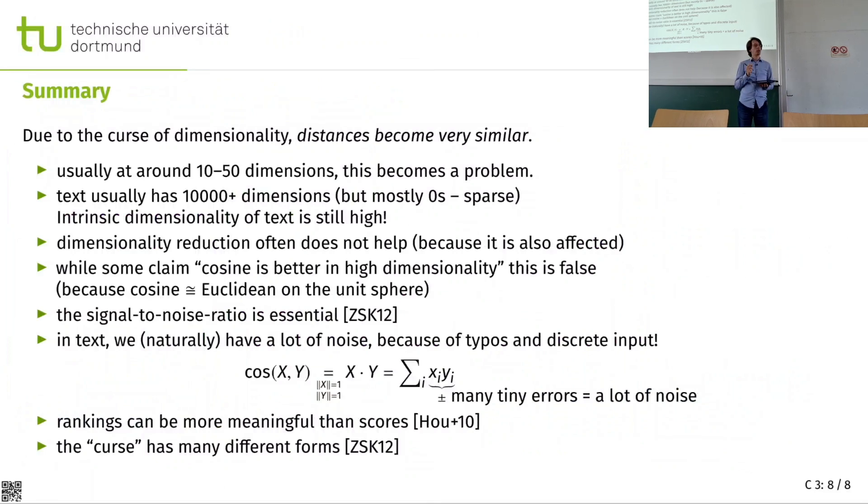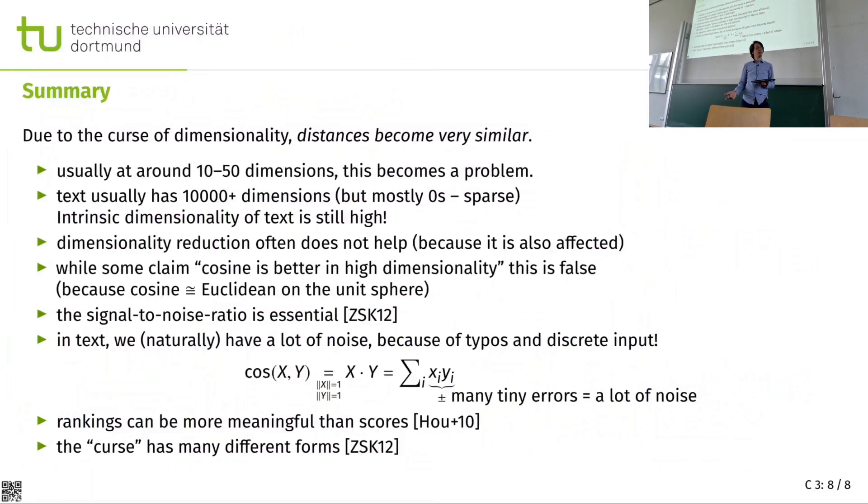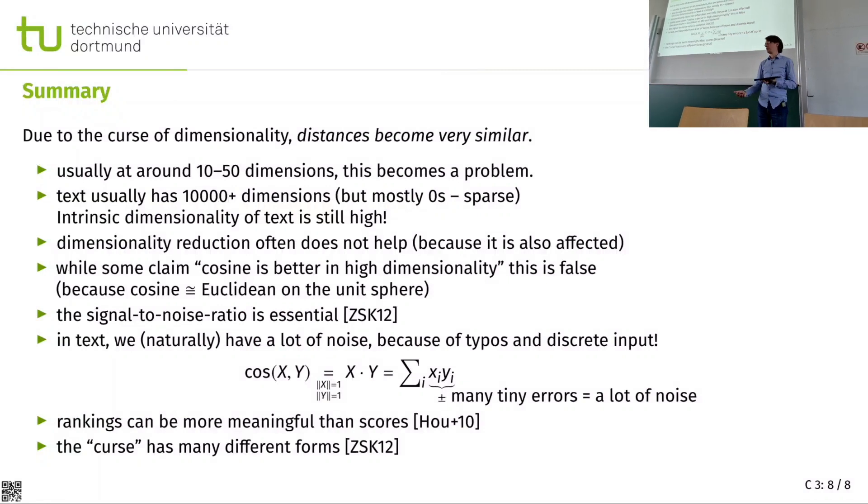Dimensionality reduction may seem as like an easy way out. It turns out it isn't because dimensionality reduction, such as PCA, has the same problem. So it kind of just pushed the problem to the dimensionality reduction step to find a reduction that has the nice properties, and that doesn't work either.